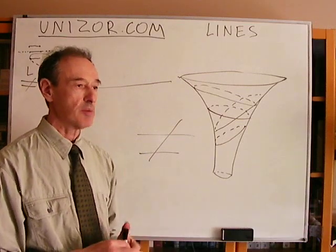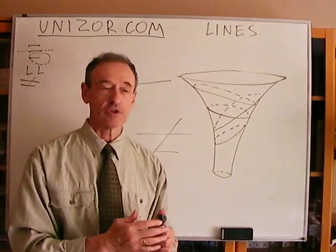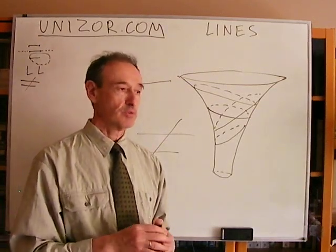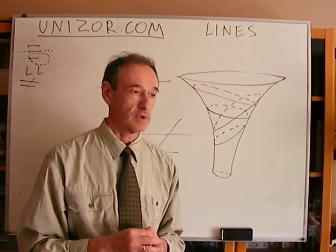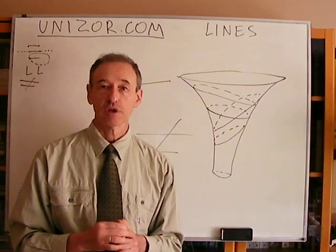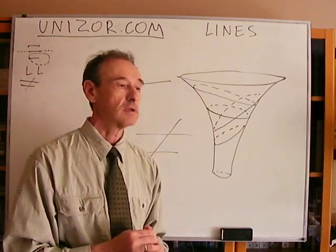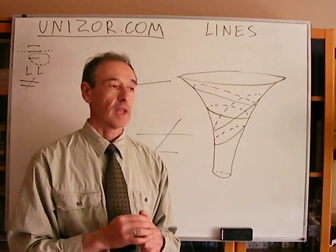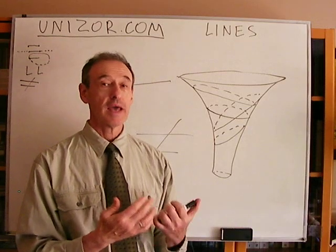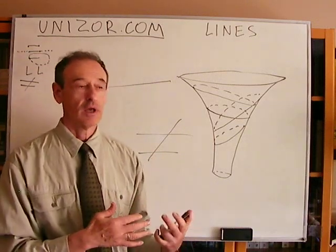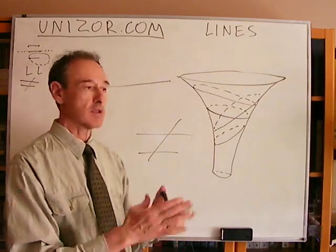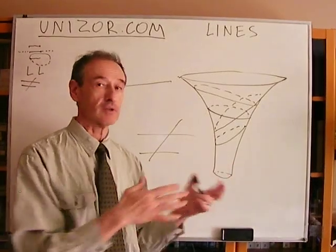If we change the axiom, we can actually have a completely different geometrical object. And these examples — this one and the previous sphere — show that they do have certain practical implementation. So, thinking about geometry only from the Euclidean position is not actually correct. And if you go even further down the line, if you take the progress of physics made in the 20th century — especially the general theory of relativity that Einstein came up with — it actually talks about the curvature of our space. So our space is not really Euclidean.